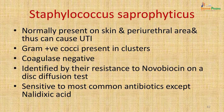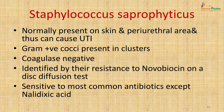Staphylococci can also cause UTIs, specifically coagulase-negative staphylococci present on the skin — Staphylococcus saprophyticus — which travel from the periurethral skin up the urethra into the bladder causing cystitis. It is a gram-positive coccus in clusters, coagulase-negative, identified from other coagulase-negative staphylococci by its resistance to novobiocin on disc diffusion. It is sensitive to most common antibiotics except nalidixic acid.